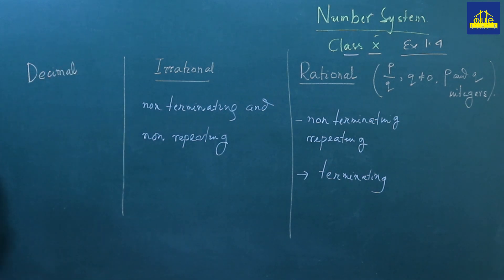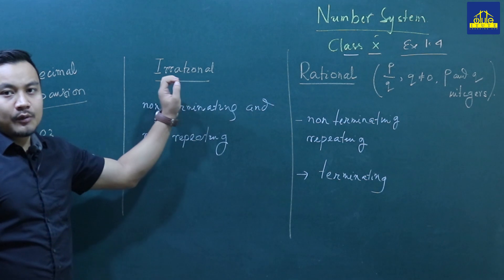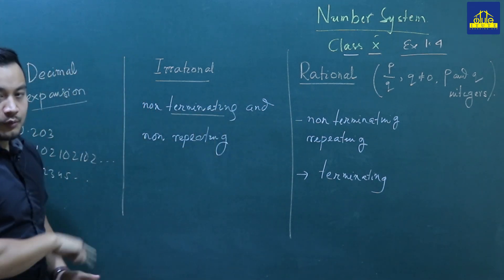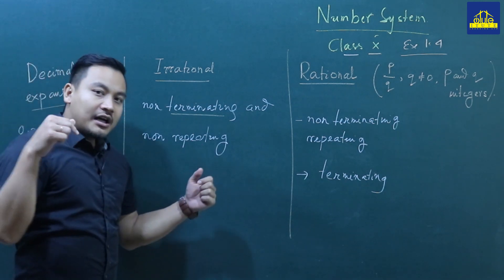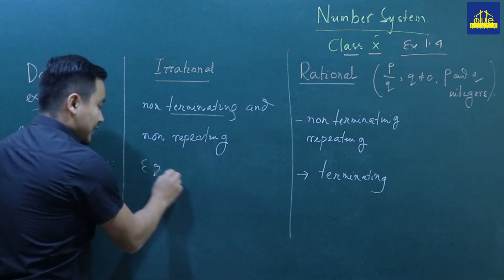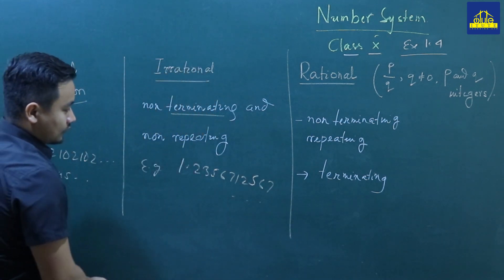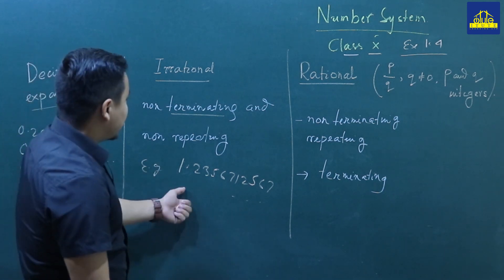We are going to discuss the decimal expansion. For example: 0.203, 0.102102102..., or 0.211111... If a decimal expansion is non-terminating and repeating, like 1.121212... or numbers where a pattern repeats, then it is repeating.